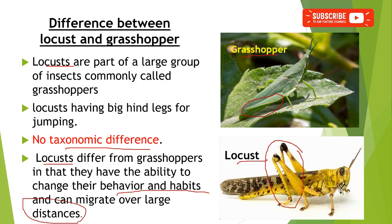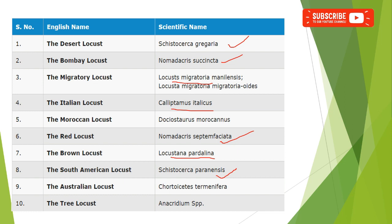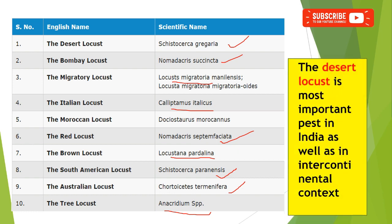Some of the different locust species are: the desert locust Schistocerca gregaria, the bombay locust Nomadacris succincta, migratory locust Locusta migratoria, Italian locust Calliptamus italicus, Moroccan locust Dociostaurus maroccanus, red locust Nomadacris septemfasciata, brown locust Locustana pardalina, South American locust Schistocerca paranensis, Australian locust Chortoicetes terminifera, and the tree locust Anacridium species. Out of these, the desert locust is one of the most important pests in India and in an international context.